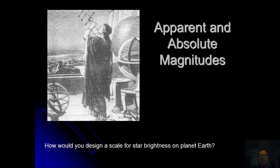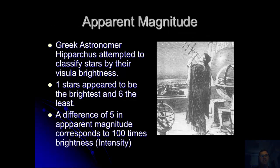Today's session is about apparent and absolute magnitudes. If you were standing on planet Earth, how would you design a scale for brightness of the stars? That was the question which was put forward. A Greek astronomer called Hipparchus attempted to classify all the stars by their visual brightness. He decided that number one stars appear to be the brightest and number six to be the least brightest.